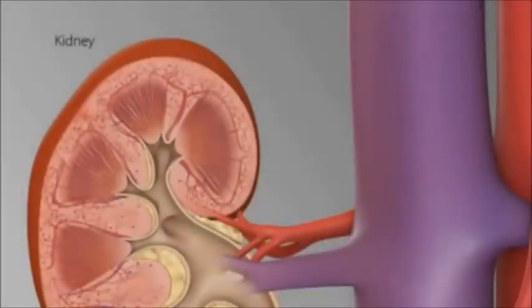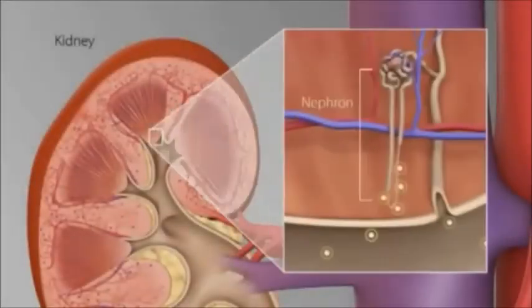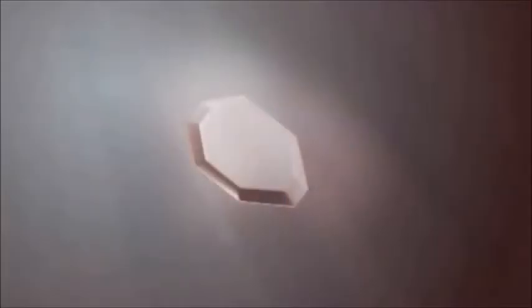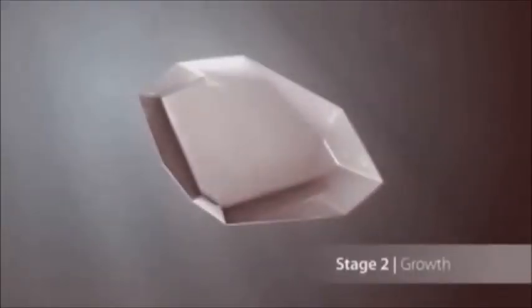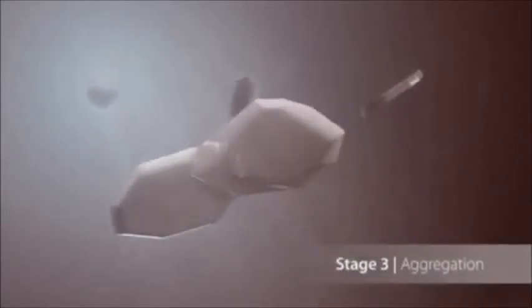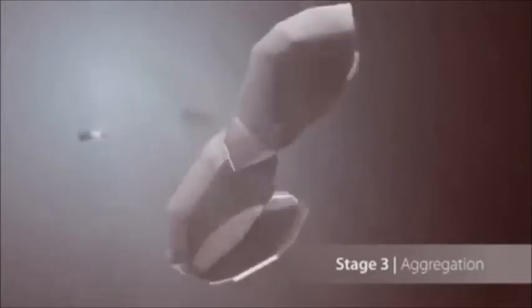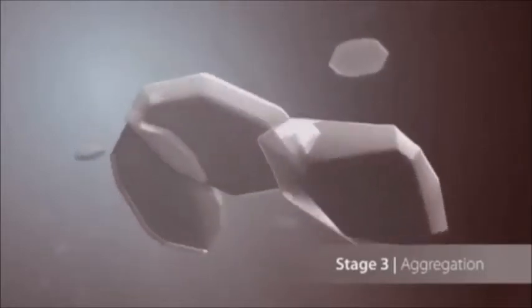The tiny crystal formations travel down the nephron and are usually deposited in the renal papilla to undergo the next major phase. The second phase in kidney stone formation is growth, when they increase in size and form large aggregates in the third stage of aggregation. This process happens rather quickly.